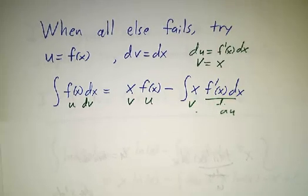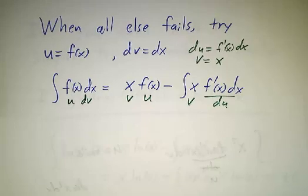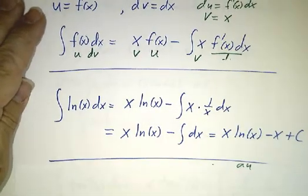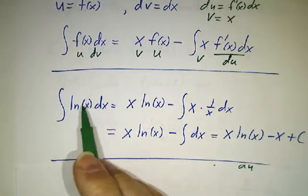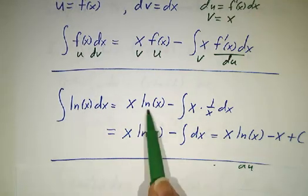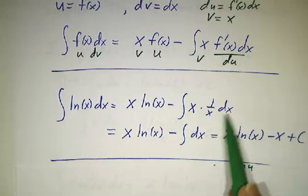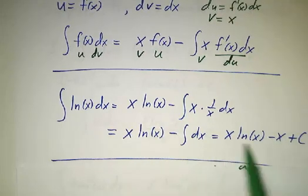So if you ever find something that gets simpler when you differentiate it, try the trick of letting dv be dx. For example, if you want to integrate ln of x, you get x times ln of x minus the integral of x times the derivative of ln, that's 1 over x. Well, that's just the integral of 1 dx and that's an easy integral.